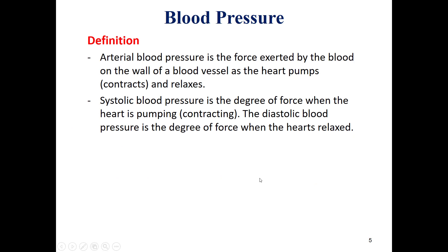Introduction. What is blood pressure? Arterial blood pressure is the force exerted by the blood on the wall of a blood vessel as the heart pumps. During the contraction of the heart, we call the maximum blood pressure the systolic blood pressure, whereas the minimum blood pressure, which occurs during the relaxation of the heart, we call the diastolic blood pressure.